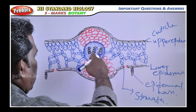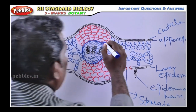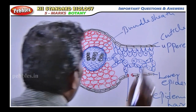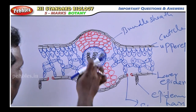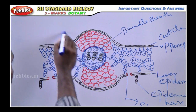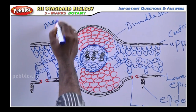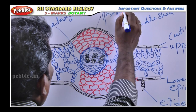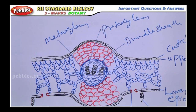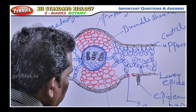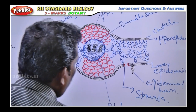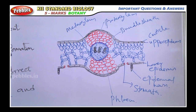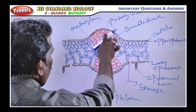In the center is the bundle sheath. This layer is called the bundle sheath, and inside it there is xylem and phloem. The xylem includes meta xylem and proto xylem. The lower part is phloem. Xylem is a water-conducting tissue; phloem is a food-conducting tissue. And here is the cortex tissue.